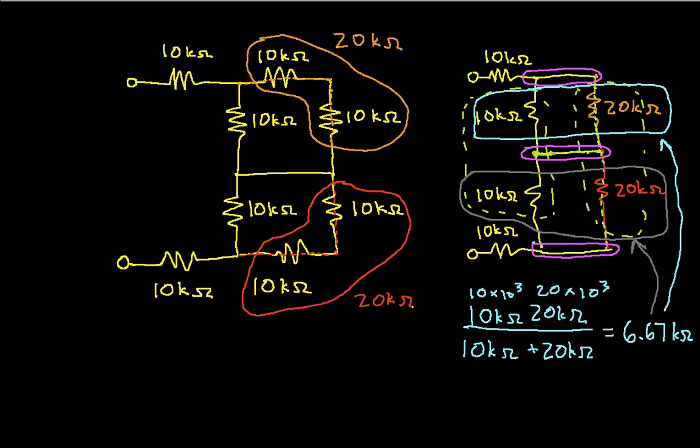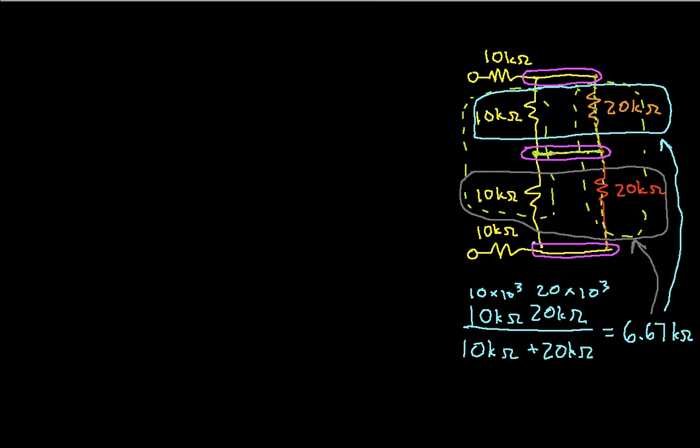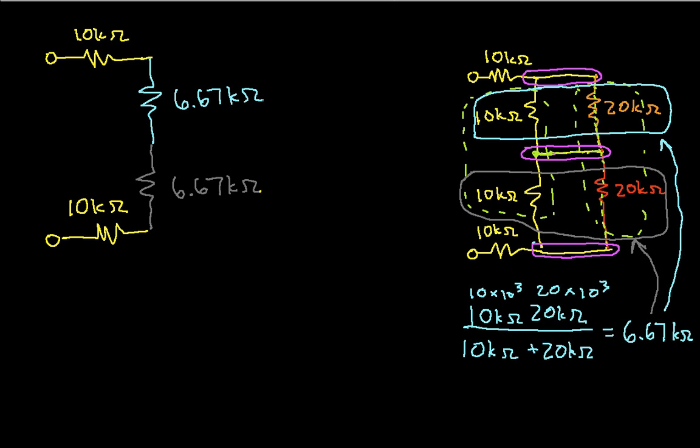So, at this point, let's redraw the network and see what we've got. So, I have 10k ohms. Let's see, this one was in light blue. I have now 6.67k ohms. I have another 6.67k ohms. And finally, 10k ohms from my original resistor there.